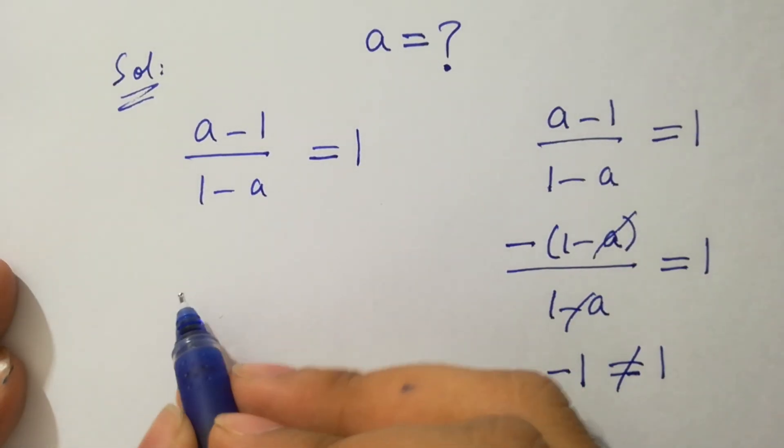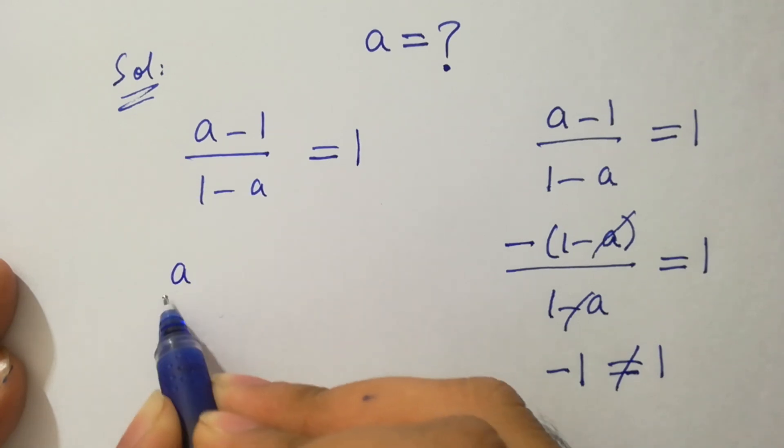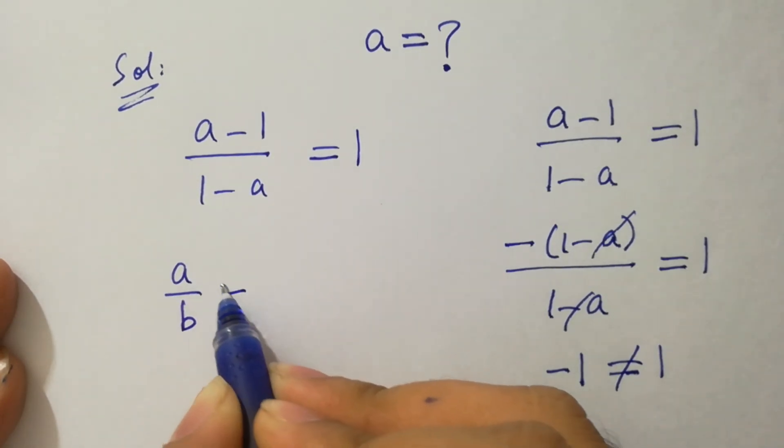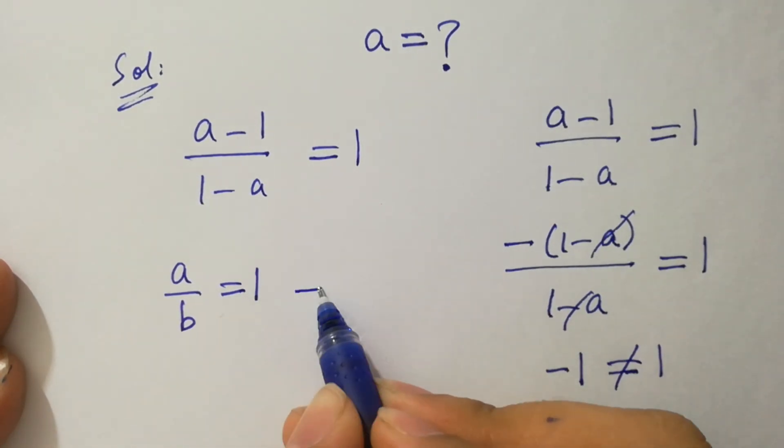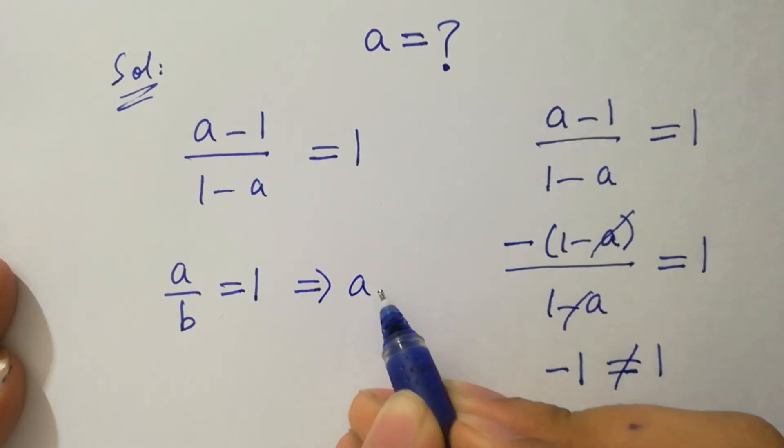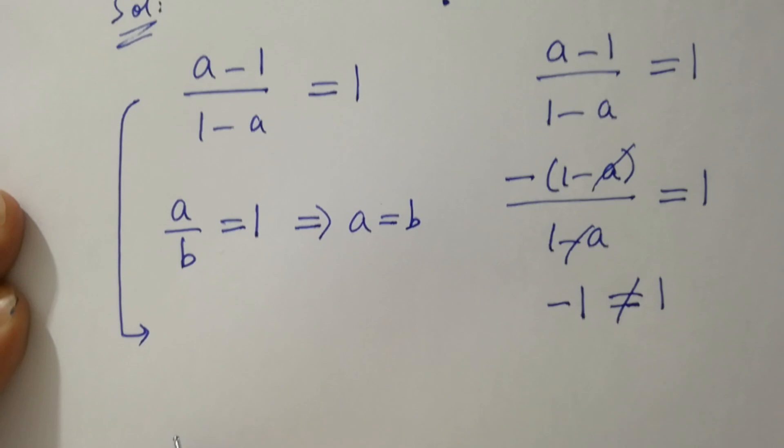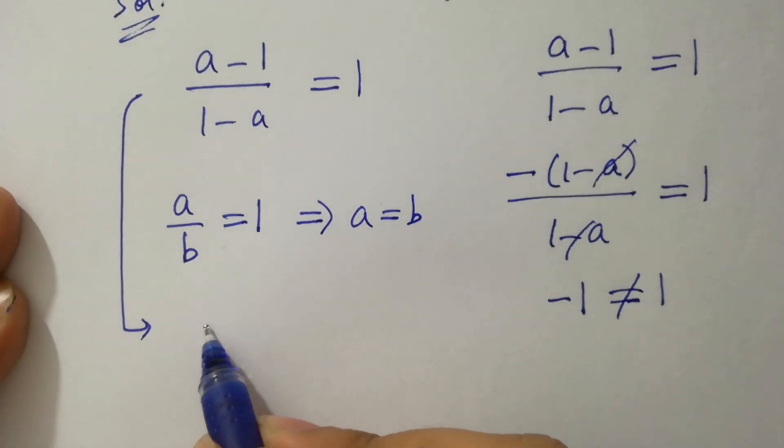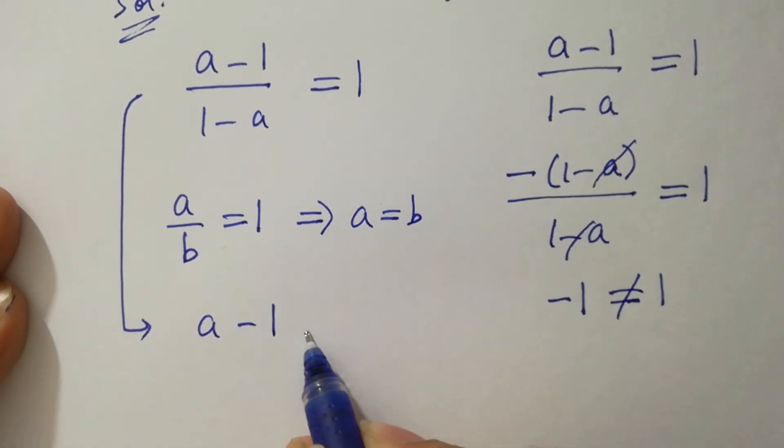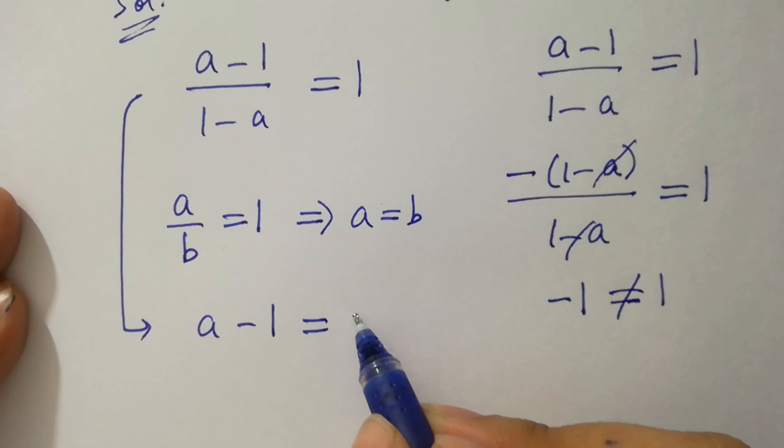As we know, if a/b = 1, then a = b. Then it will be a-1 = 1-a.